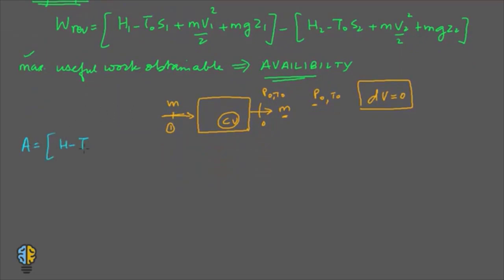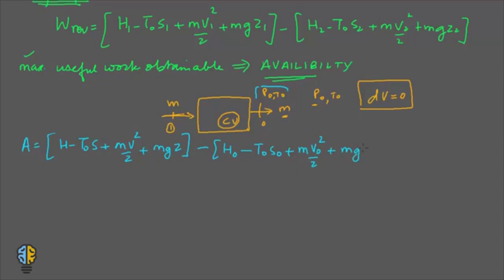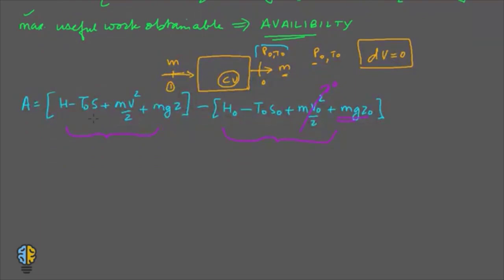The availability is: A = (h - T0*s + m*v²/2 + m*g*z) minus (h0 - T0*s0 + m*v0²/2 + m*g*z0). An important point: at the dead state the velocity is zero, so the kinetic energy term drops to zero. The potential energy will be minimum but not necessarily zero. These are the availability functions, psi.